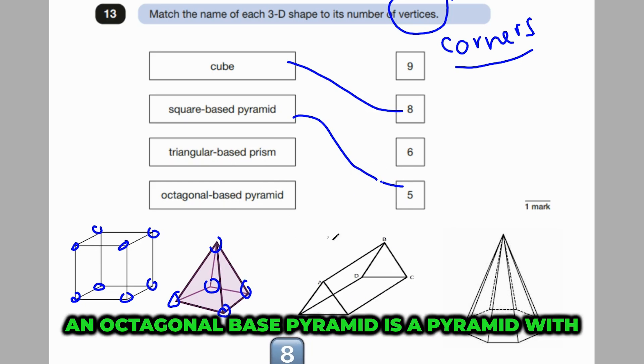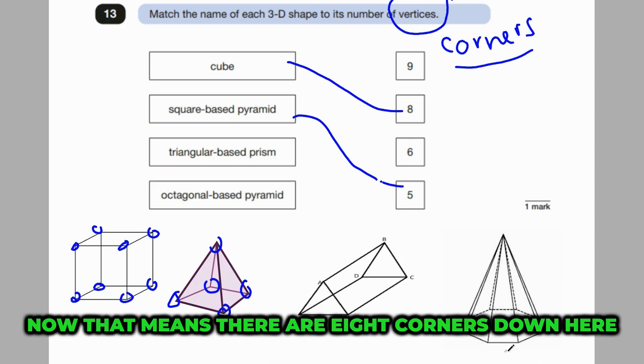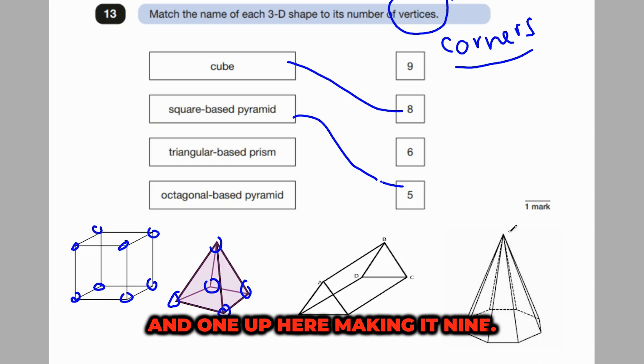An octagonal-based pyramid is a pyramid with an octagonal base, which is this. Now, that means there are 8 corners down here and 1 up here, making it 9.